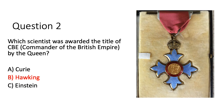Question two: the answer was Hawking. Hawking was awarded the title of CBE by the Queen. The CBE was an honour created by King George V during World War I to reward services during the war effort, but now it is awarded for those making an important contribution in their area of activity, such as Hawking's own contribution to science.